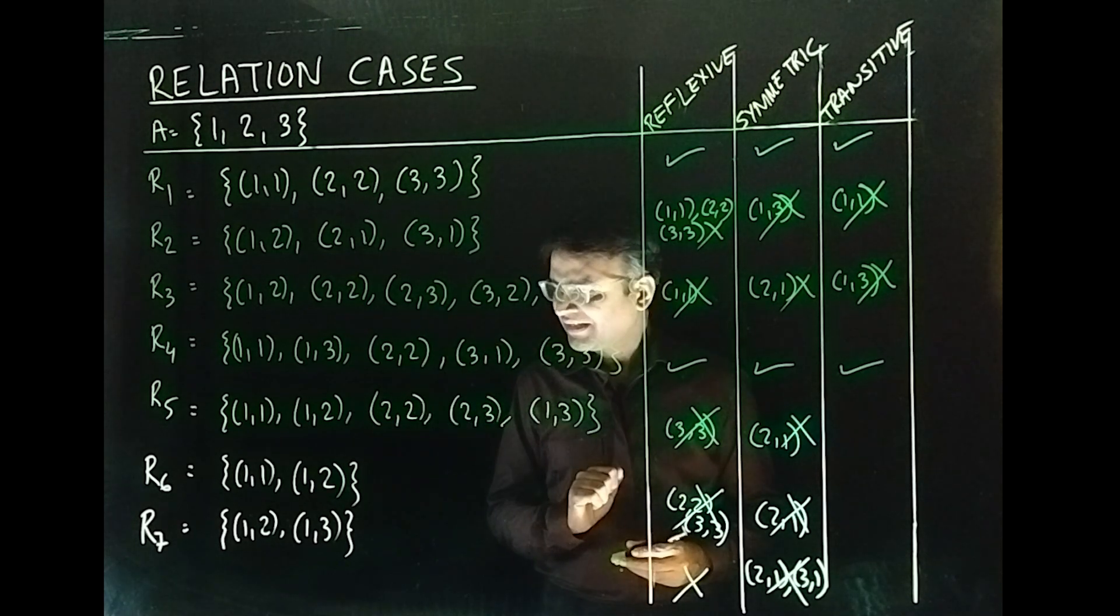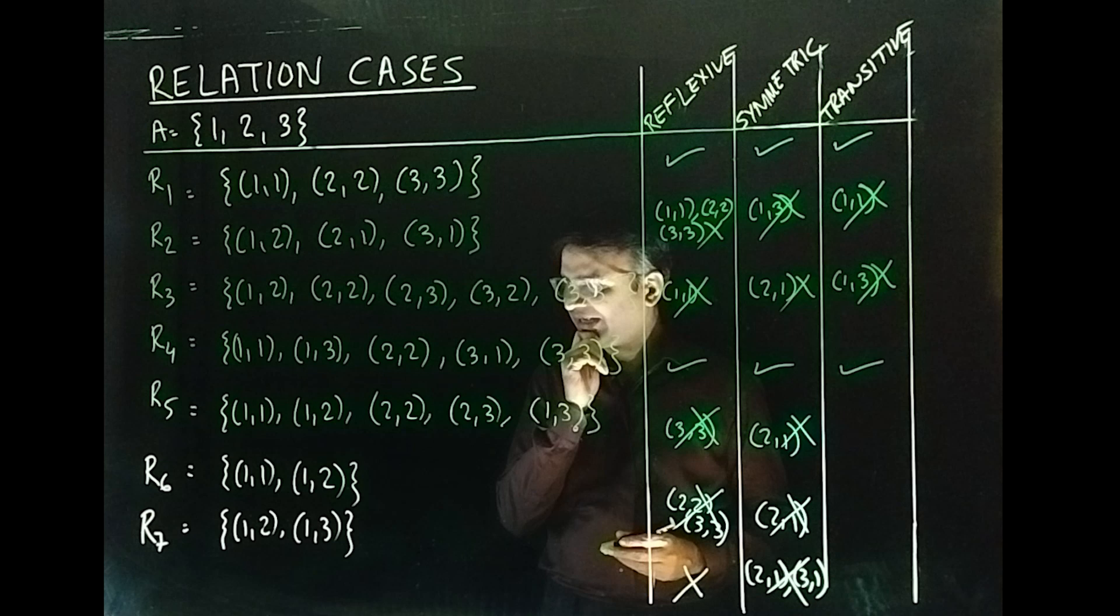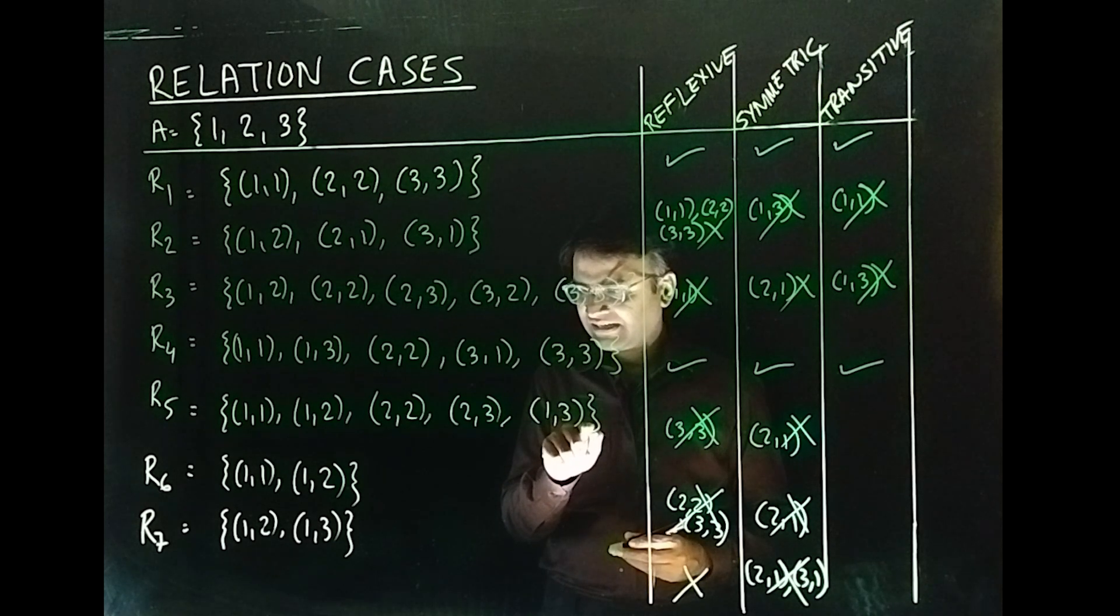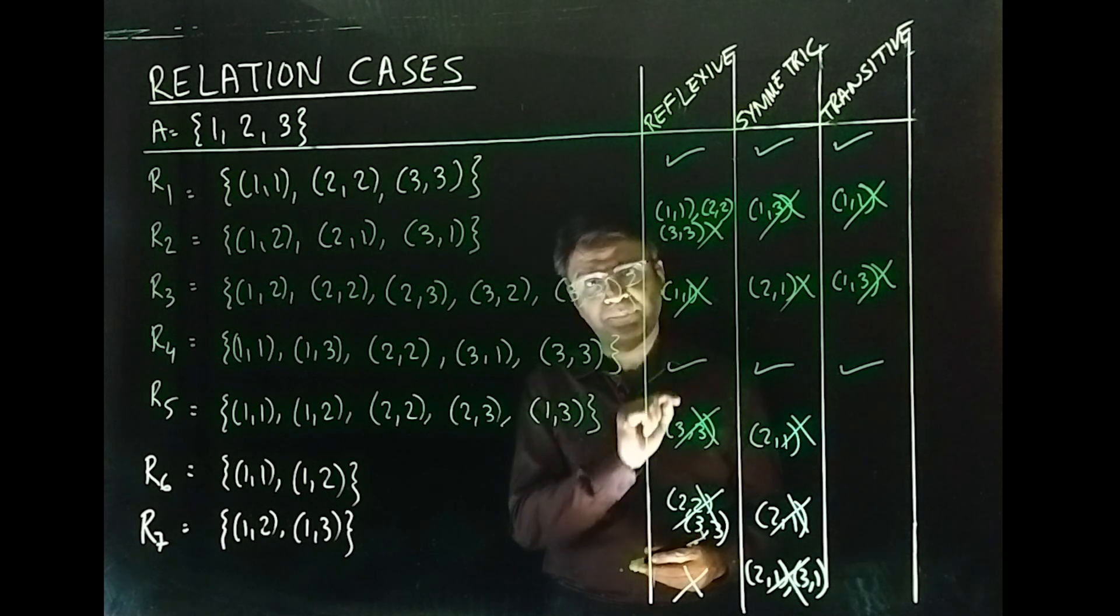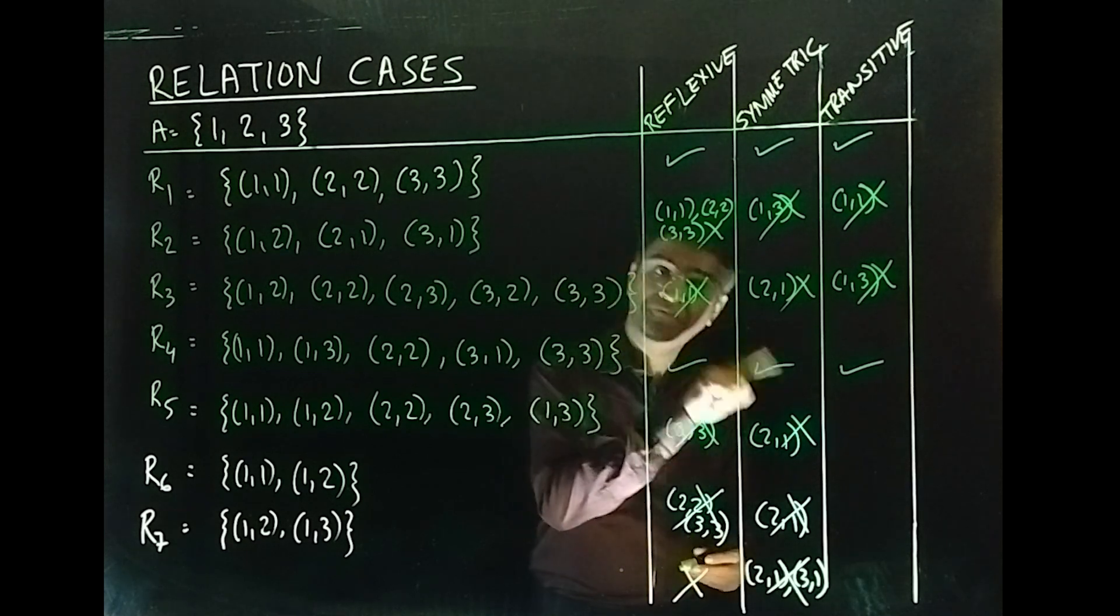And we have (1,3) and if you notice this does not have any other pair whose first component is three. Watch okay this is actually transitive by itself yeah so this is also transitive.